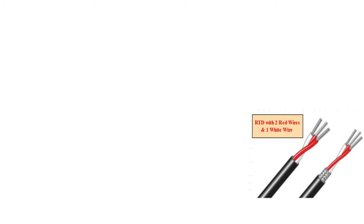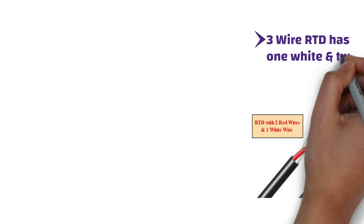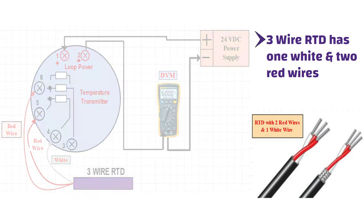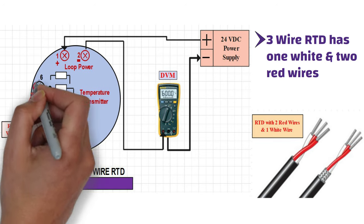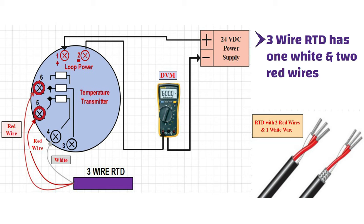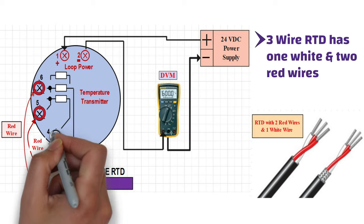As you can see from the picture, all 3-wire RTDs have one white and two red wires. So one red wire will be connected to terminal number 5, another red wire will be connected to terminal number 6, and the white wire will be connected to terminal number 4.